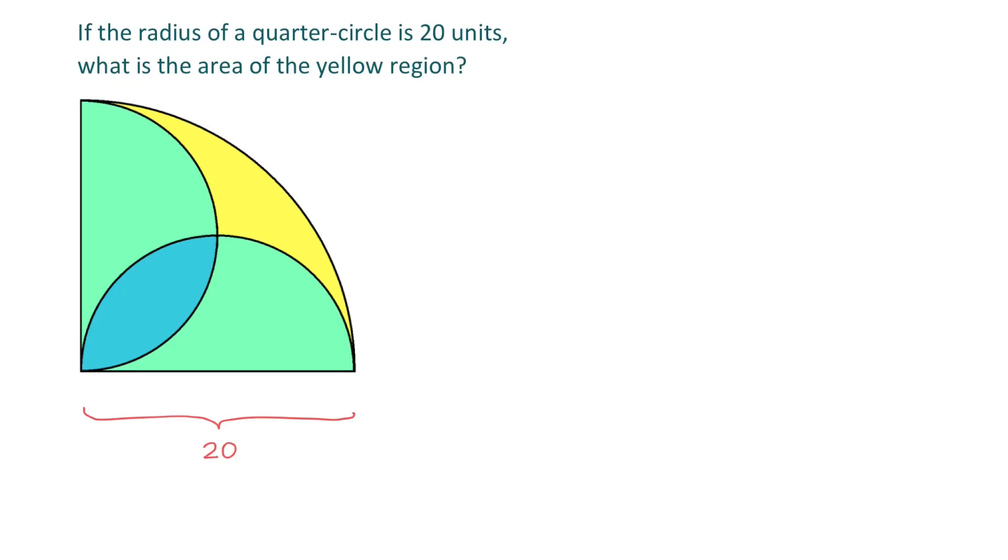Hello. In this figure we have a quarter circle with the radius of 20 units and two intersecting semicircles. This is one of the semicircles and this is the other one. How can we find the area of the yellow region?